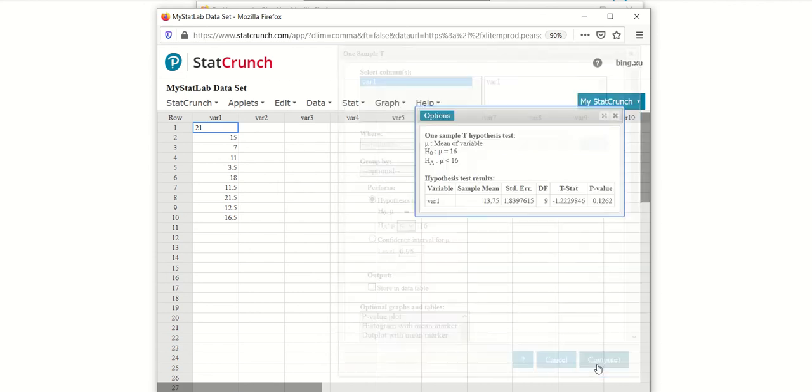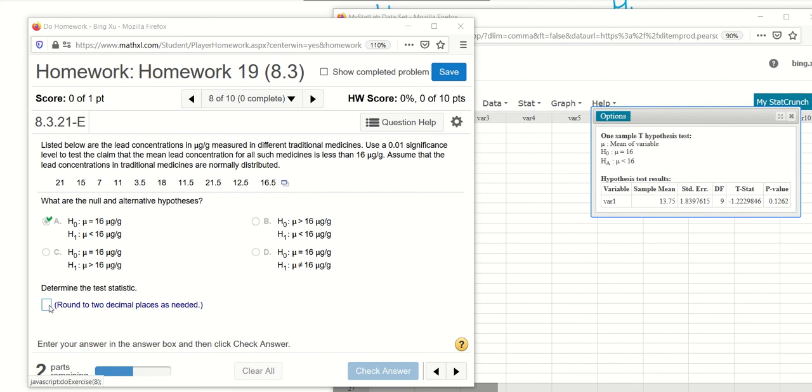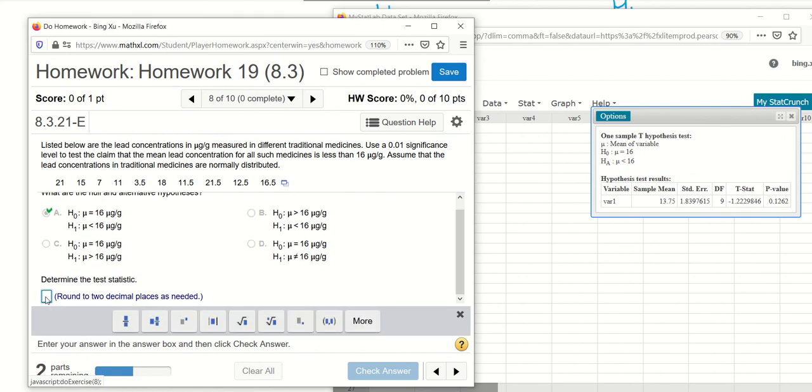And compute. And you can tell the p-value is 0.1262 and the t-statistic is negative 1.22. So back to the problem, the test statistic rounded to two decimal places will be negative 1.22.